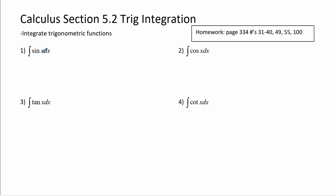The antiderivative of sine is just going to be negative cosine of x plus some c. Hopefully you remember that. So the antiderivative of cosine is sine of x plus some c.